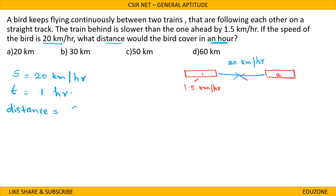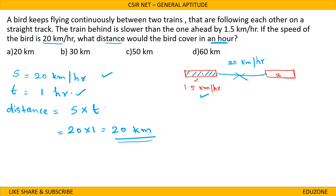Distance equals speed into time. The speed of the bird is 20 km per hour and the time is 1 hour, so distance is 20 into 1, which is 20 km. The speed of the trains and their difference is not needed here — only the bird's speed and the time are required. The answer is 20 km, option A.